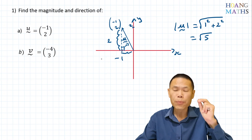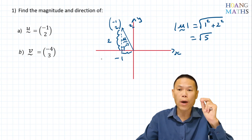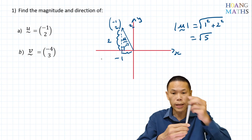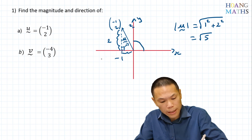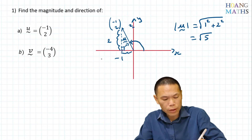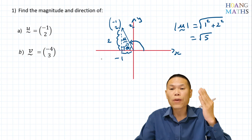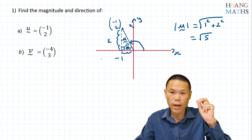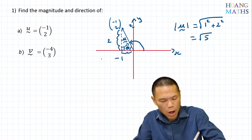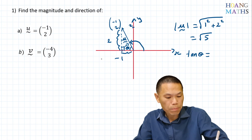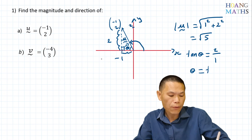Now to work out the directions — remember the direction of a vector is always measured from the positive x-axis and goes anti-clockwise. We first work out the reference angle theta. We have opposite and adjacent, so tan θ equals opposite over adjacent. To work out theta, we go inverse tan of 2 over 1, which is 2.